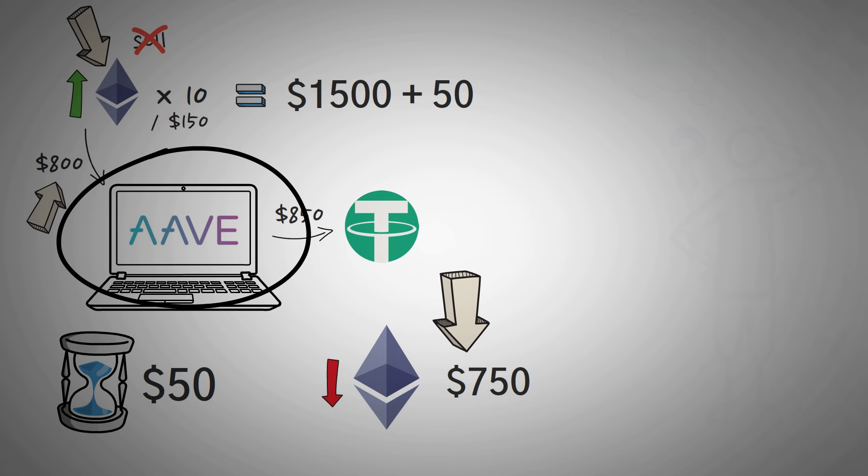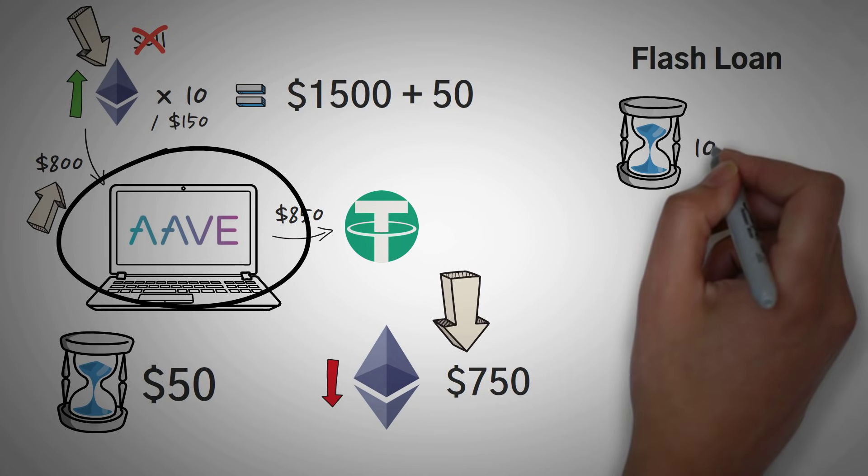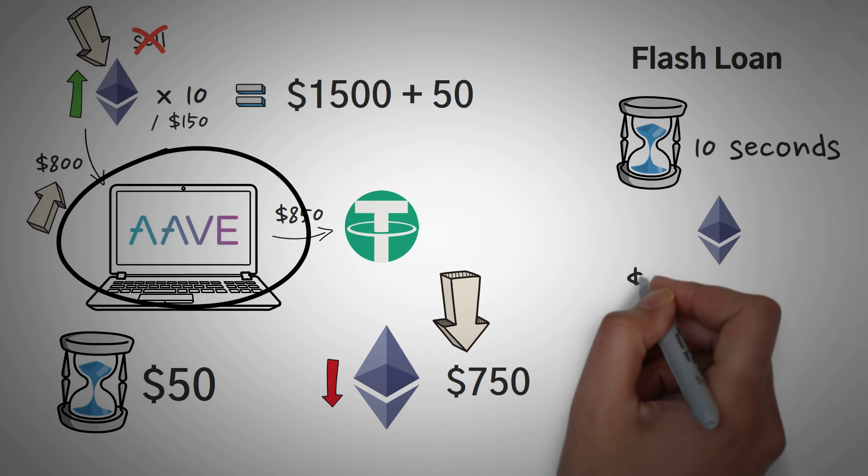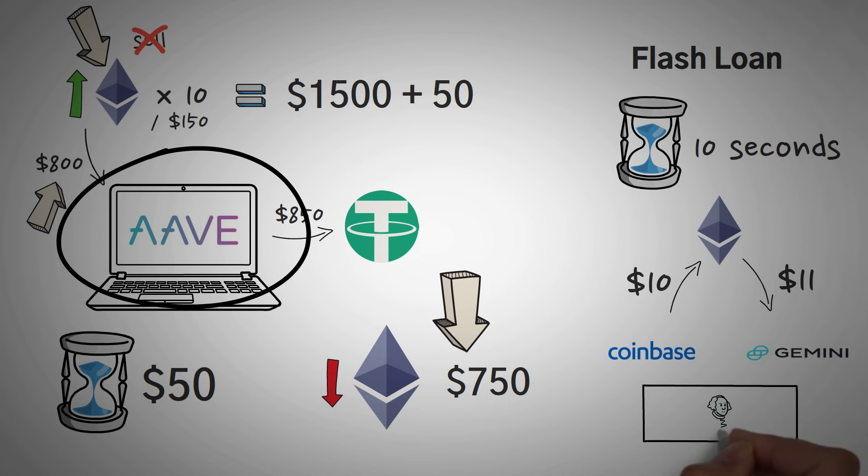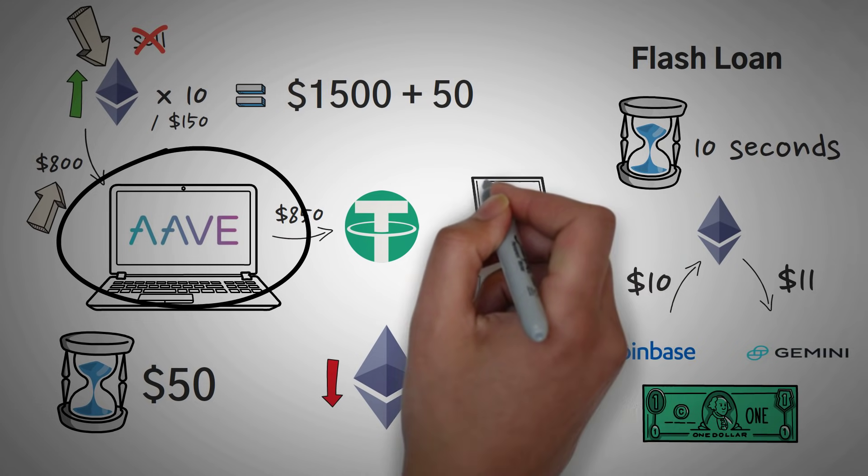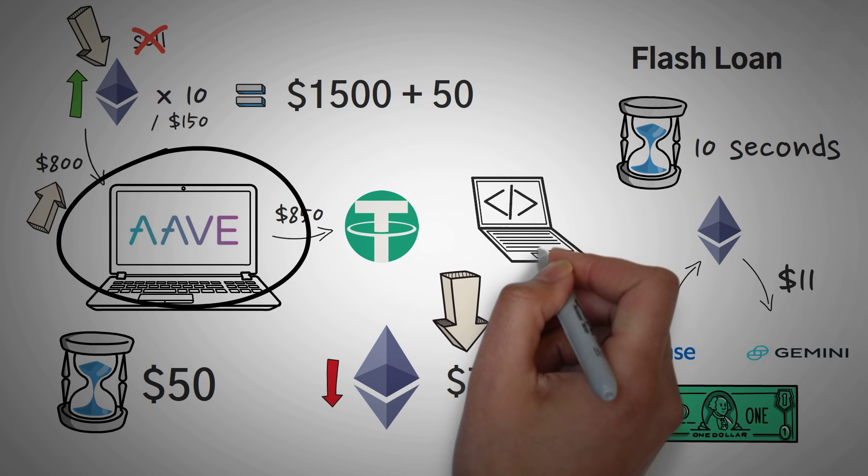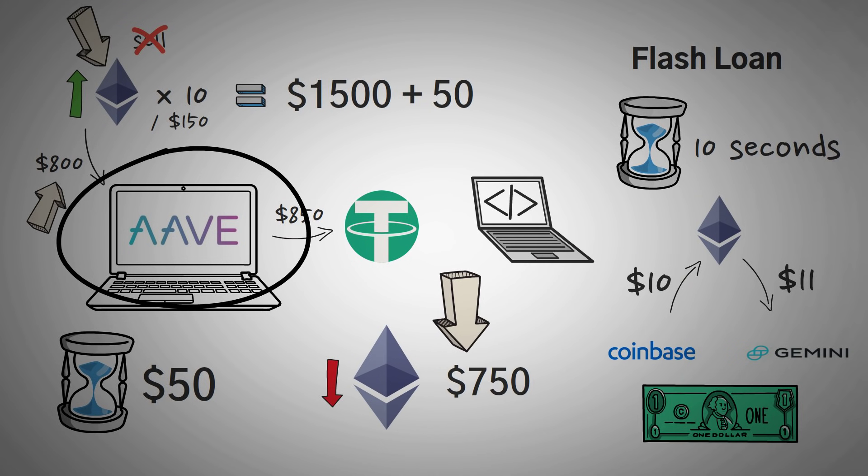Now this might be information overload, but real quick, there is a second type of loan in crypto called a flash loan, which is a loan that lasts for like 10 seconds. If you could buy Ethereum for $10 on Coinbase and then sell it for $11 on Gemini, theoretically, you can make a dollar every time you did that.